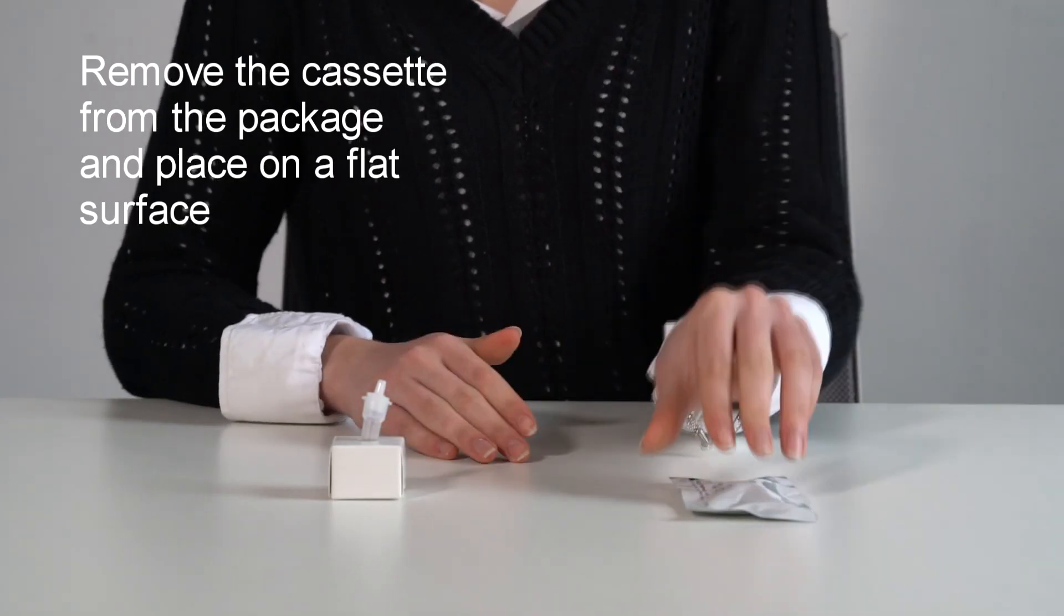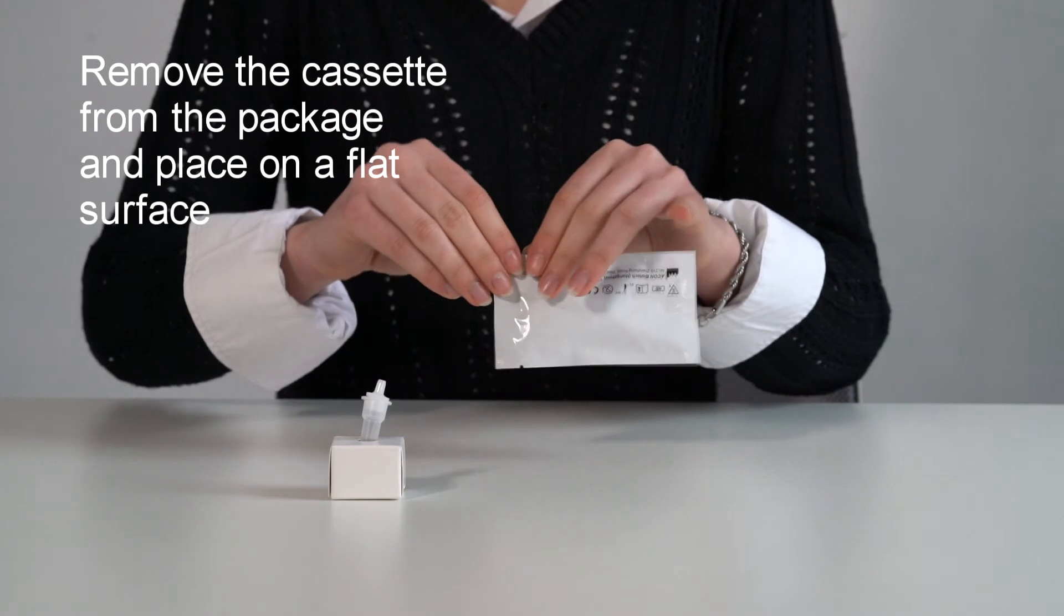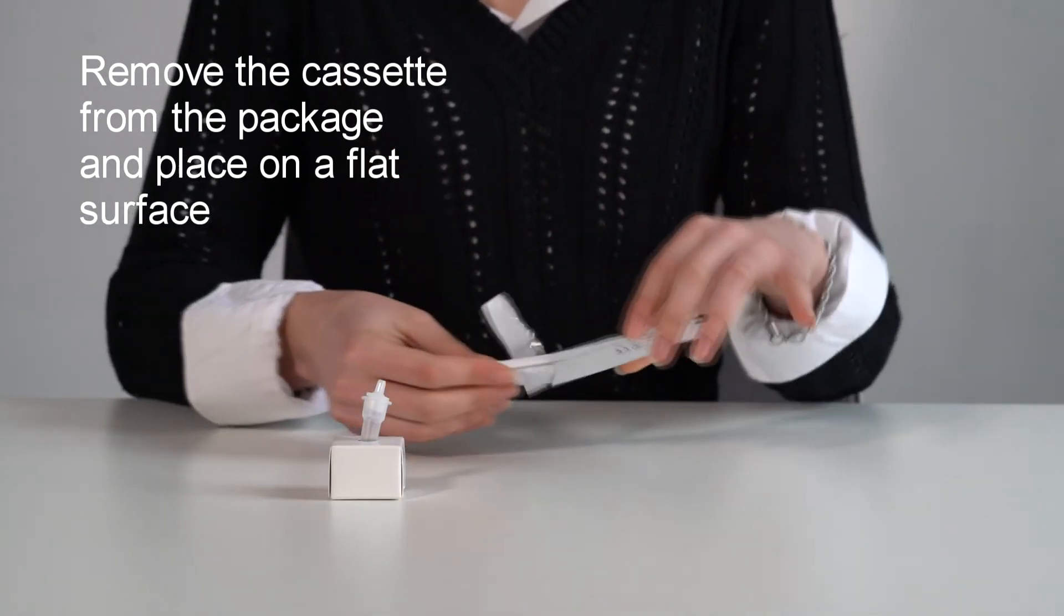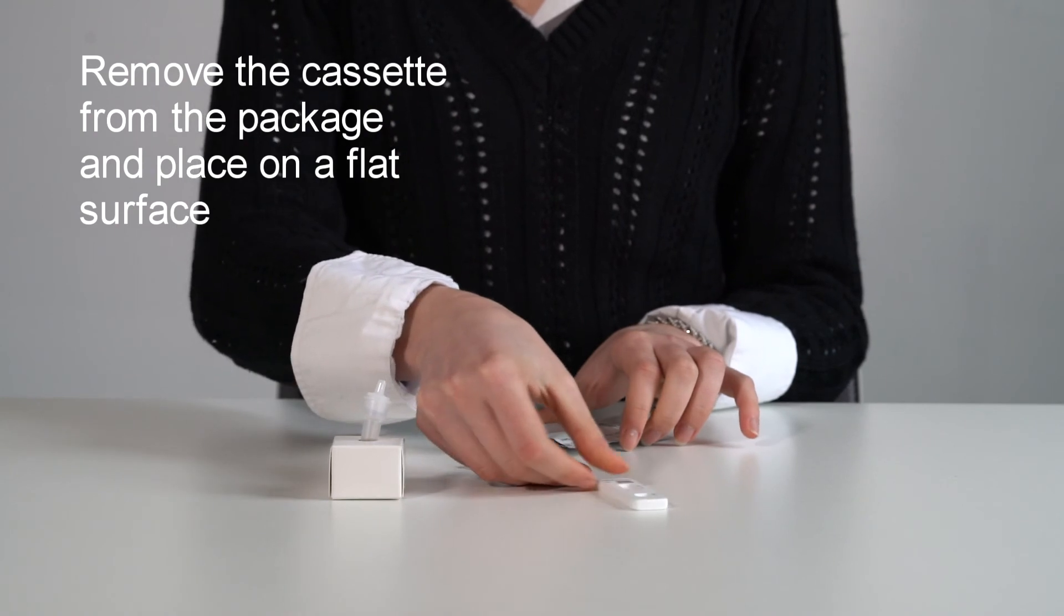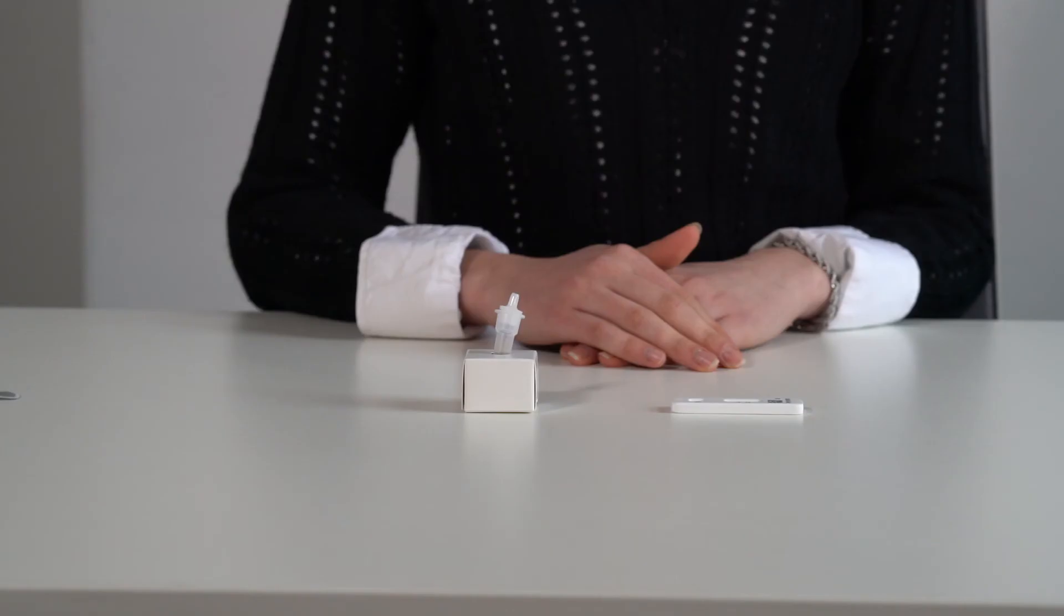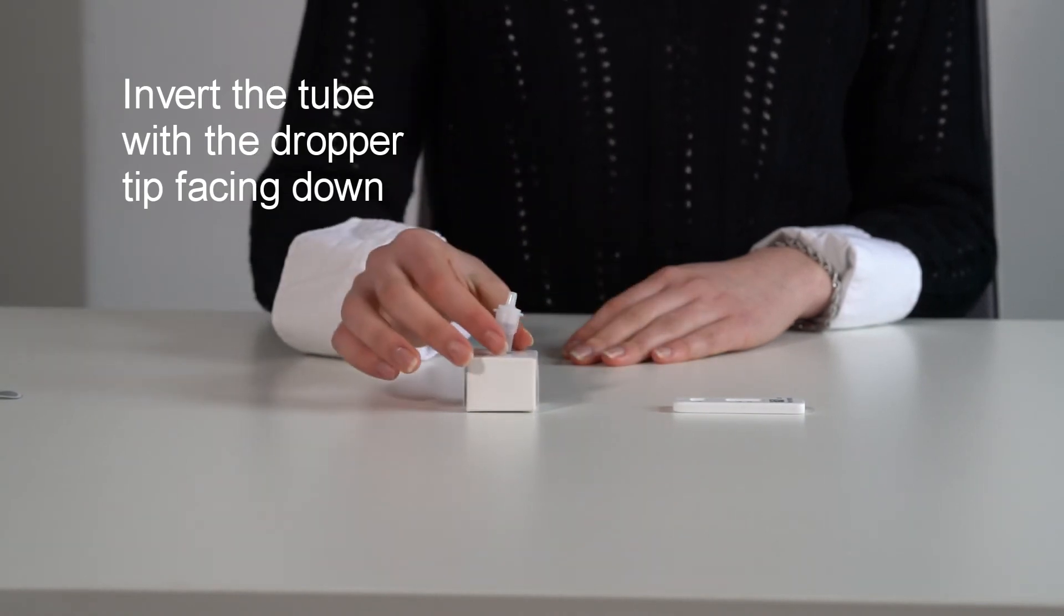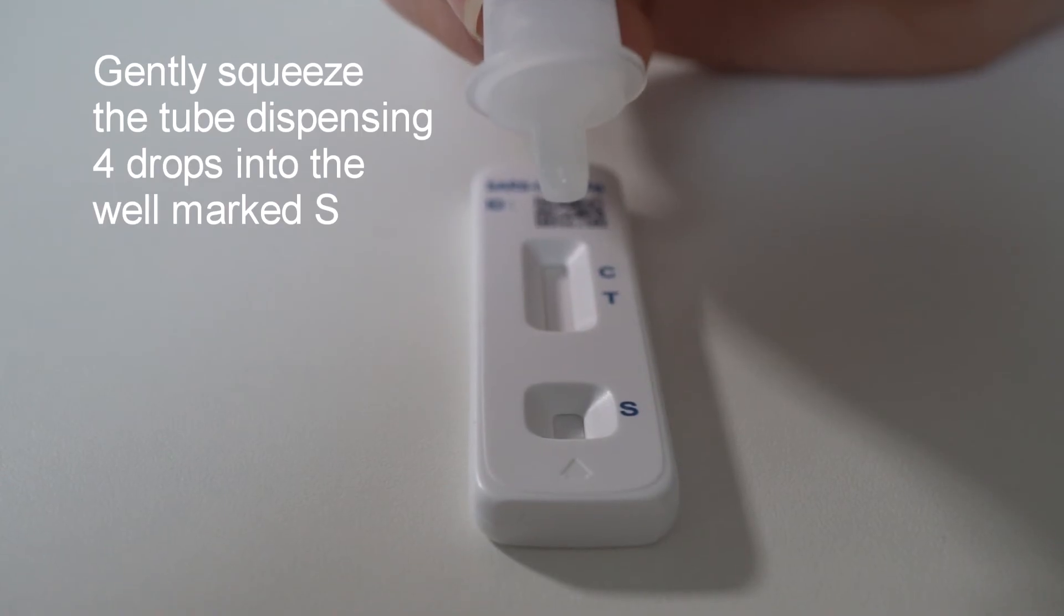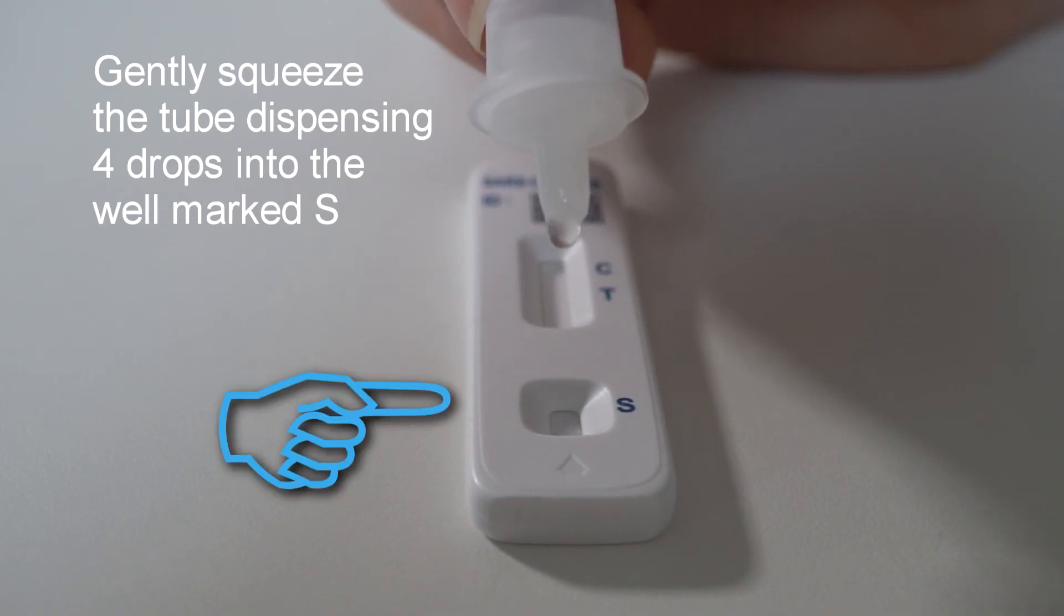Remove the cartridge from the foil packaging and place it gently onto a flat surface. Invert the tube and release four drops into the sample well area, denoted by an S.